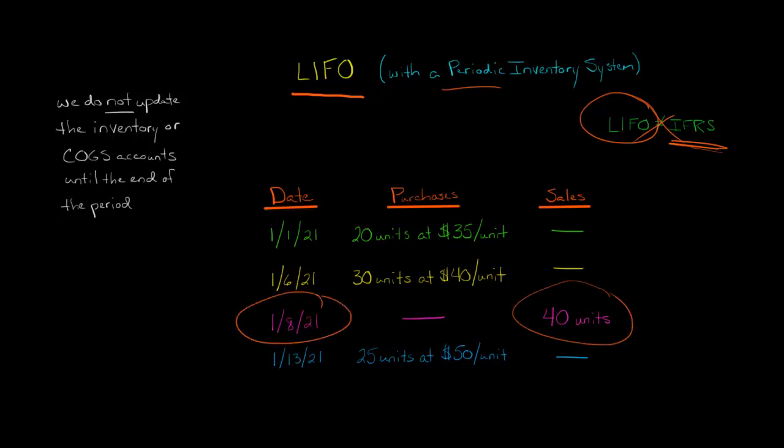Because we're using a periodic inventory system, when we make the sale, for example, on January 8th, we don't go to the most recent purchases as of January 8th. We don't affect the inventory account at all on January 8th. We wait till the end of the period. And let's just say the end of the period happens to be January 15th or something like that. So at some point, it's after here.